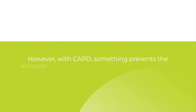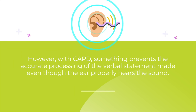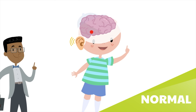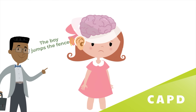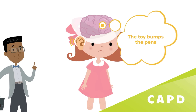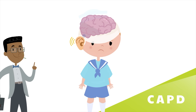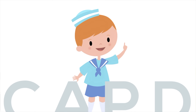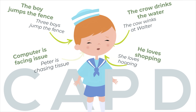However, with CAPD, something prevents the accurate processing of the verbal statement made, even though the ear properly hears the sound. Often, someone with CAPD will hear a wide range of different words and/or add extra letters from what was actually spoken.